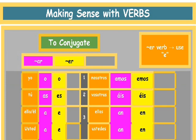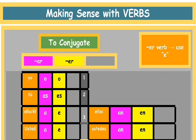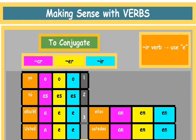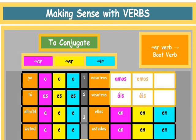So we have to focus on the boot. Inside the boot, ER and IR are conjugated the same way, just like I said at the beginning of this video. So it would be the same exact endings inside the boot, and of course the O for the yo form. The only difference would be outside the boot, which is for nosotros and vosotros — and of course nosotras and vosotras.